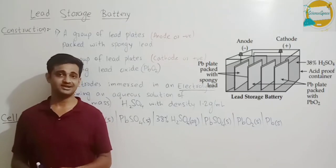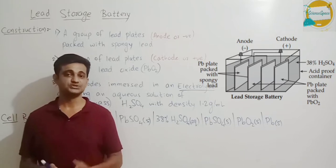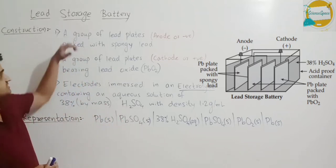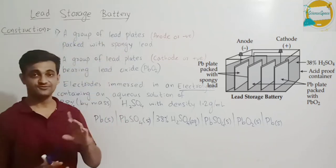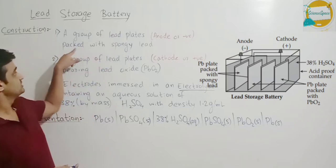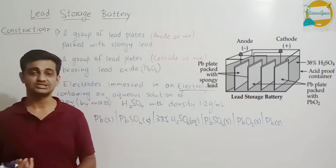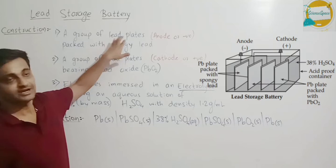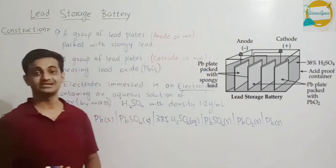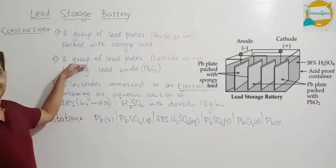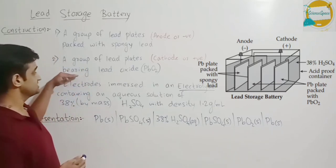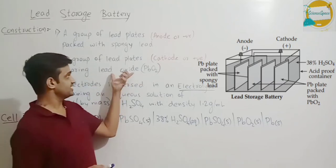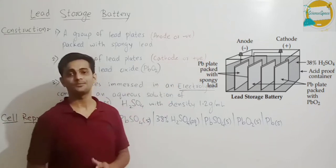Let us start with the construction of a lead storage battery, which is also known as a lead accumulator. This battery consists of a first group of lead plates packed with spongy lead coating. This first group of lead plates acts as the anode or the negative terminal of the battery. The second group of lead plates is coated with lead oxide PbO2, and this second group acts as the cathode or positive terminal.